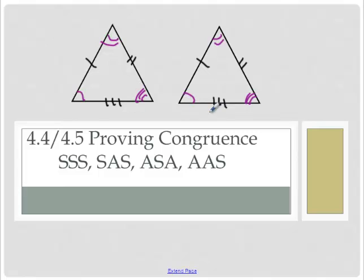To prove that triangles are congruent, we wanted to find a way to do it, and that's what these four acronyms do. SSS, SAS, ASA, and AAS are four different ways to prove triangles congruent.